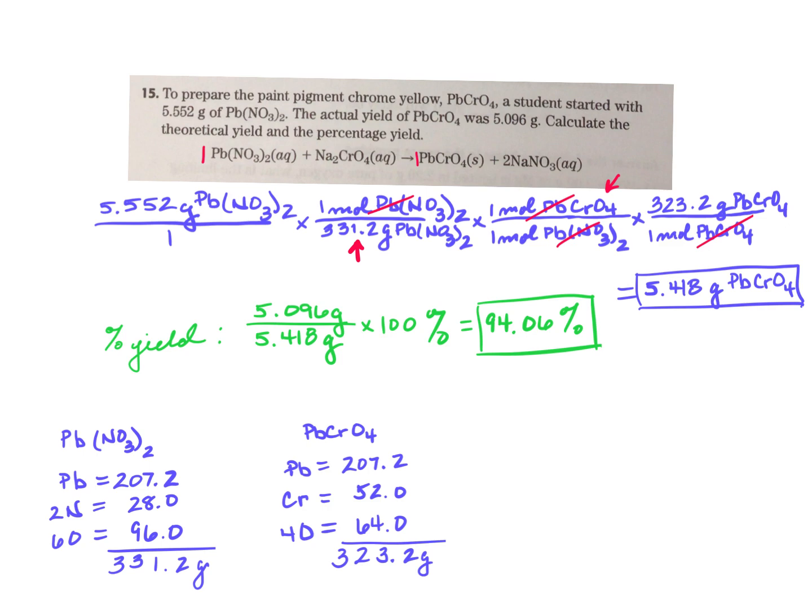And then to get the percent yield, so I took the actual yield, which they said was 5.096. So that goes on the top. And then you divide that by the theoretical yield. That's the yield you calculate, which I got 5.418. And then you multiply by 100, and that should give you a percentage. Obviously, I got 94.06. So I hope this helps. Feel free to stop by tomorrow, and we can talk more about this. Have a good night.